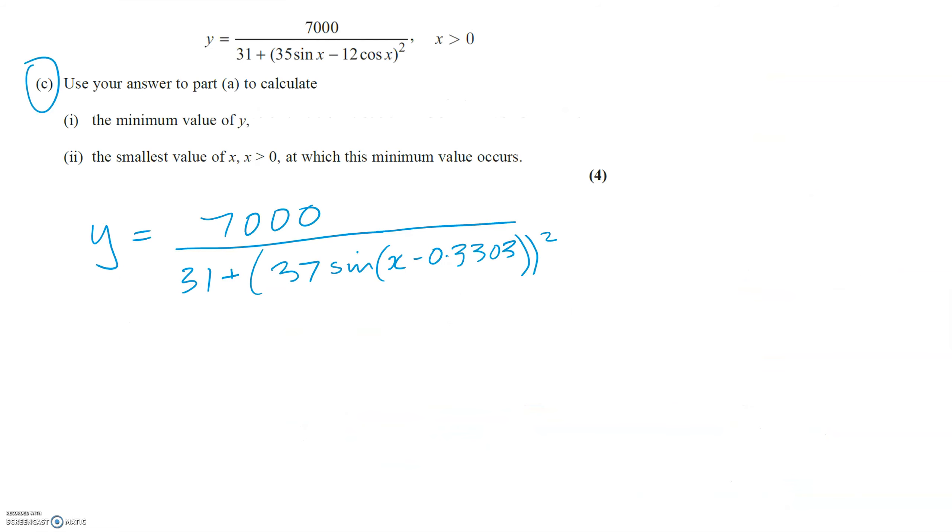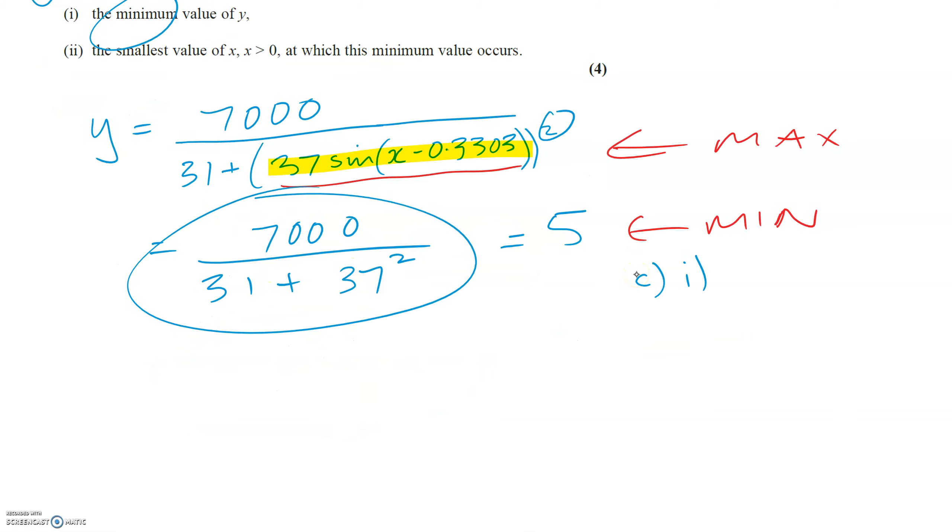Going back to our actual question for part C, we could start by replacing that with this because that's what we found in part A. And now using what we've just done in terms of maximum and minimum values, you can see that if we want the whole fraction to be a minimum, we want the denominator to be a maximum. In other words, we want this to be as big as possible. So the maximum this can ever be is 37. So the whole fraction, the minimum the whole fraction can be would be 7000 over 31 plus 37. We still need to square it because of that. So the minimum this can ever be is this. And so if we type that into a calculator, you should get five. So that is the minimum the whole fraction can be. So the answer to C part one is five.